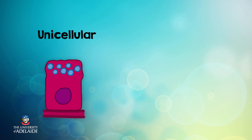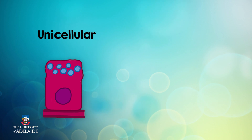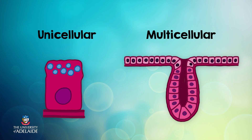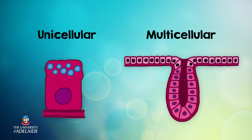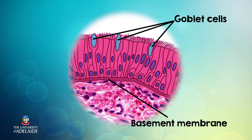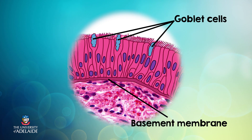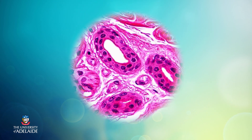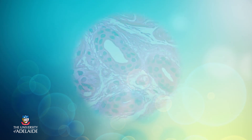Exocrine glands can be unicellular, or made up of just one cell, or they can be multicellular, made up of lots of cells. Examples of unicellular glands are the individual goblet cells that are found throughout the respiratory and digestive tracts. Multicellular glands, such as sweat glands, are formed by clusters of secretory cells.